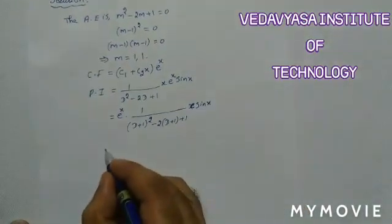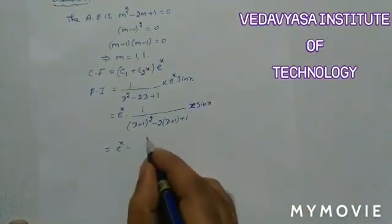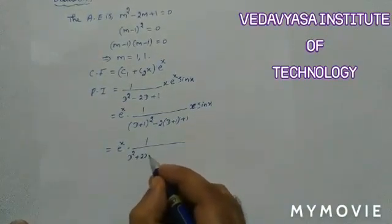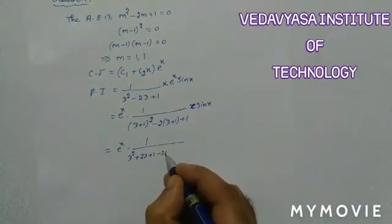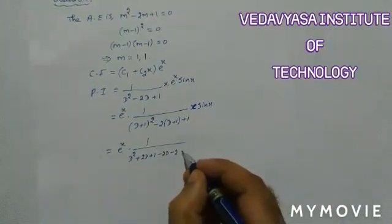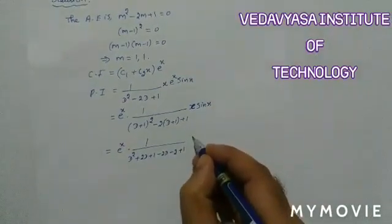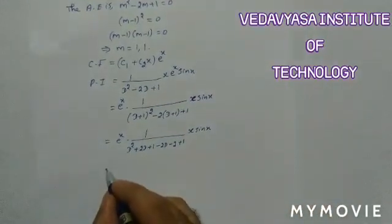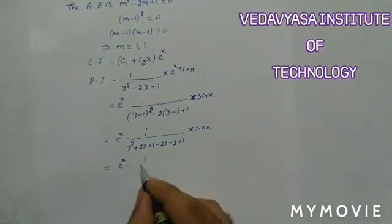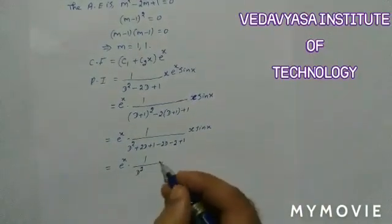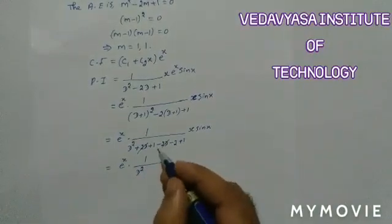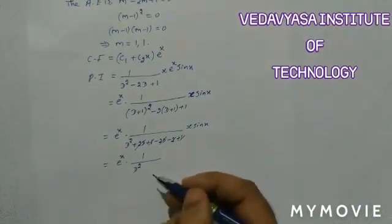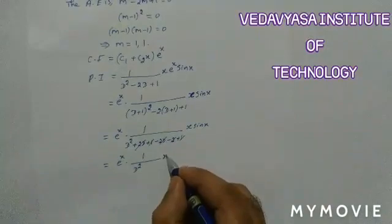Expanding the denominator: (D+1)² - 2(D+1) + 1 = D² + 2D + 1 - 2D - 2 + 1 = D². The terms cancel, so only D² remains in the denominator, leaving eˣ · (1/D²) · x·sin x.